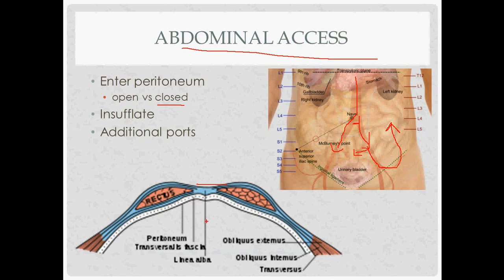The first pop is going through the abdominal fascia — the linea alba above the arcuate line, where anterior and posterior rectus sheaths meet. The second pop is going through the peritoneum. The click is the safety stylet popping out of the needle. The needle has a beveled edge, and when it senses no resistance after penetrating, the blunt safety stylet deploys to avoid damaging structures underneath.